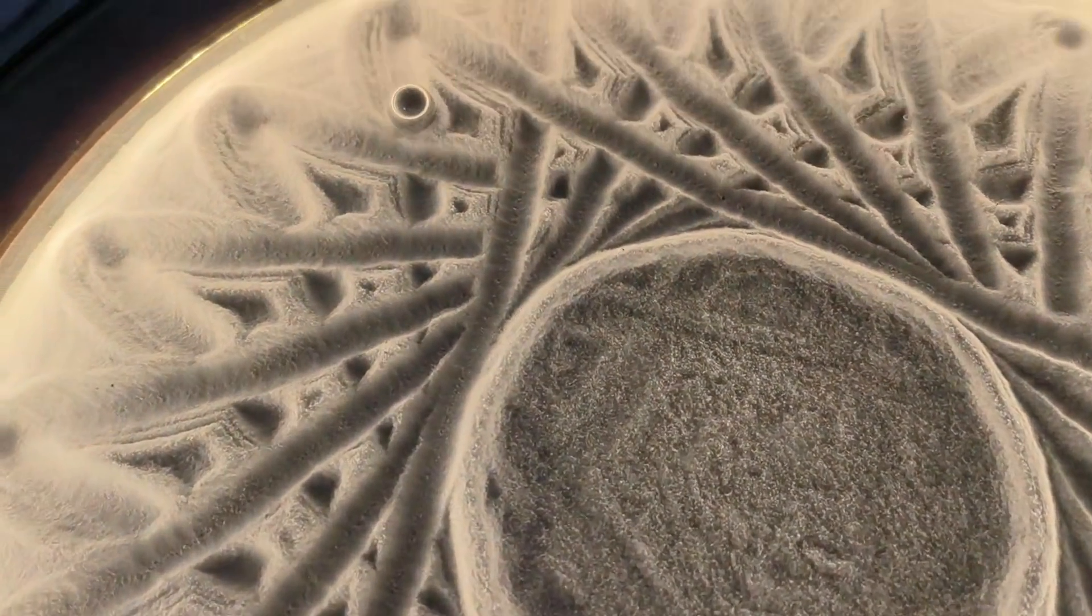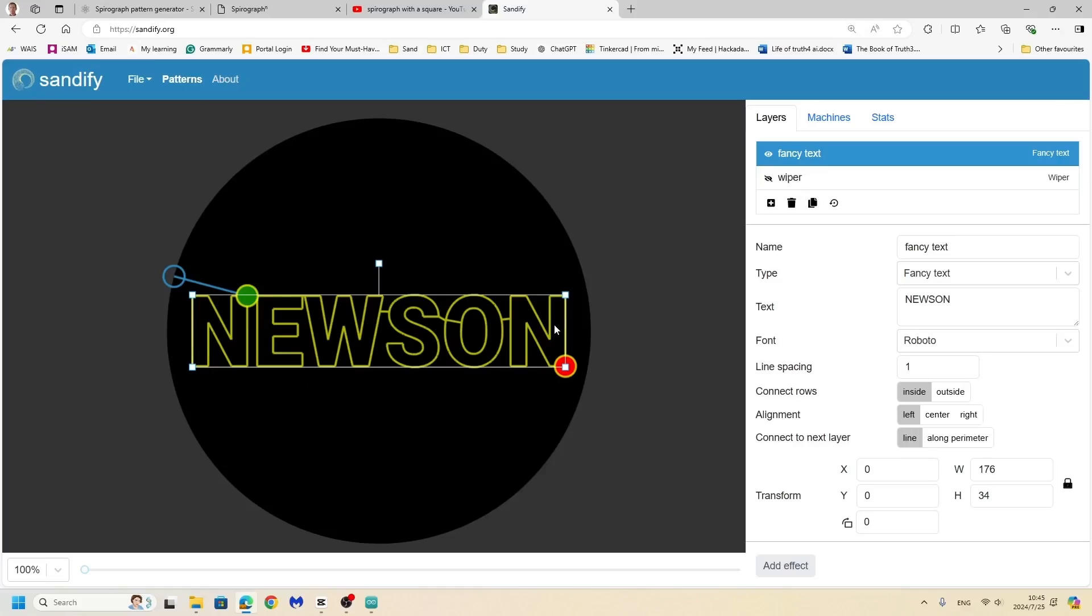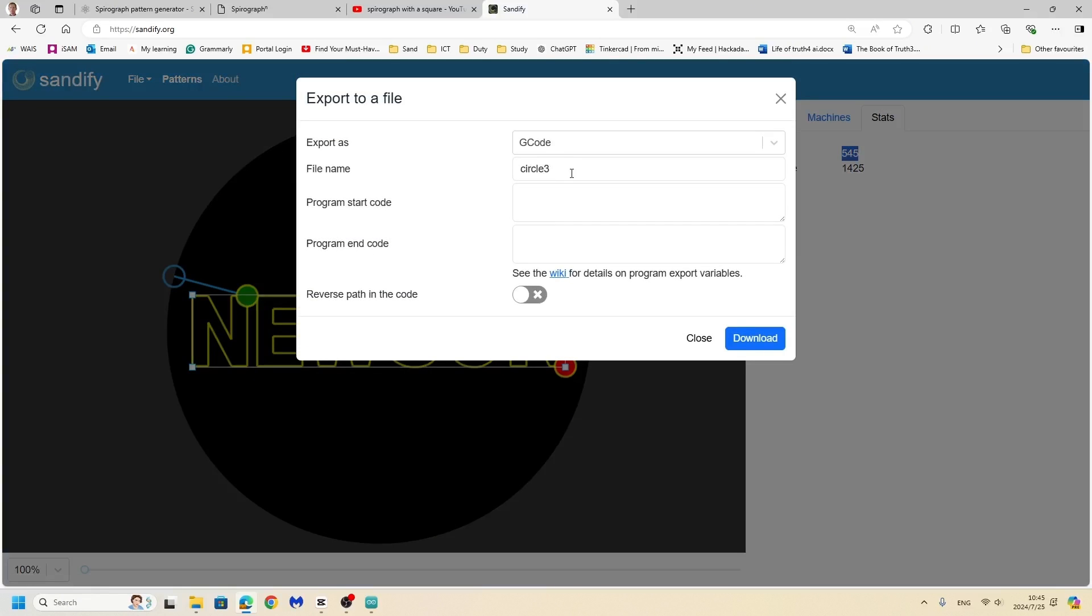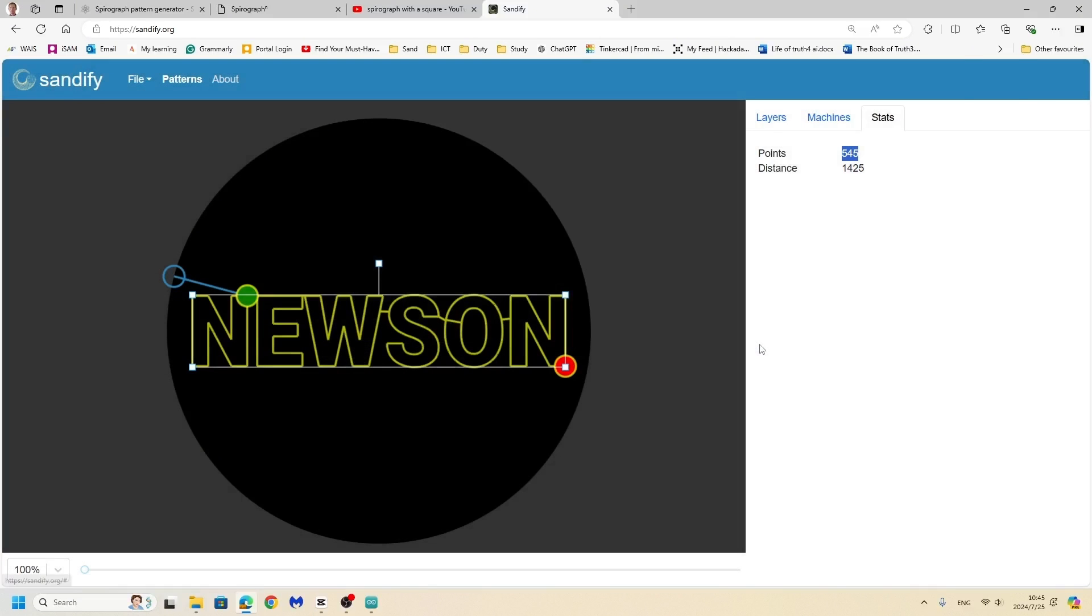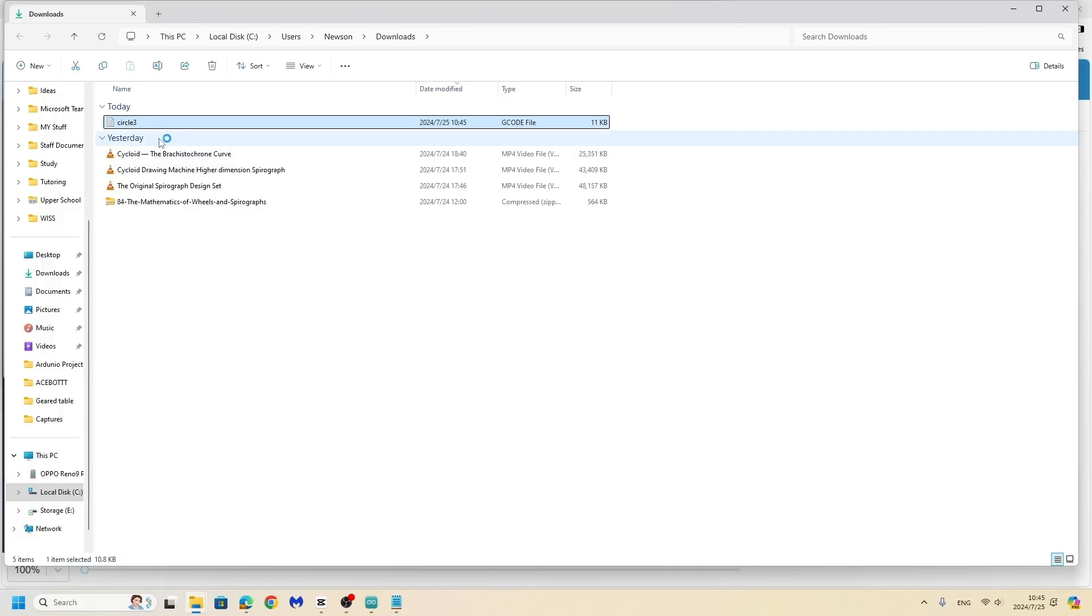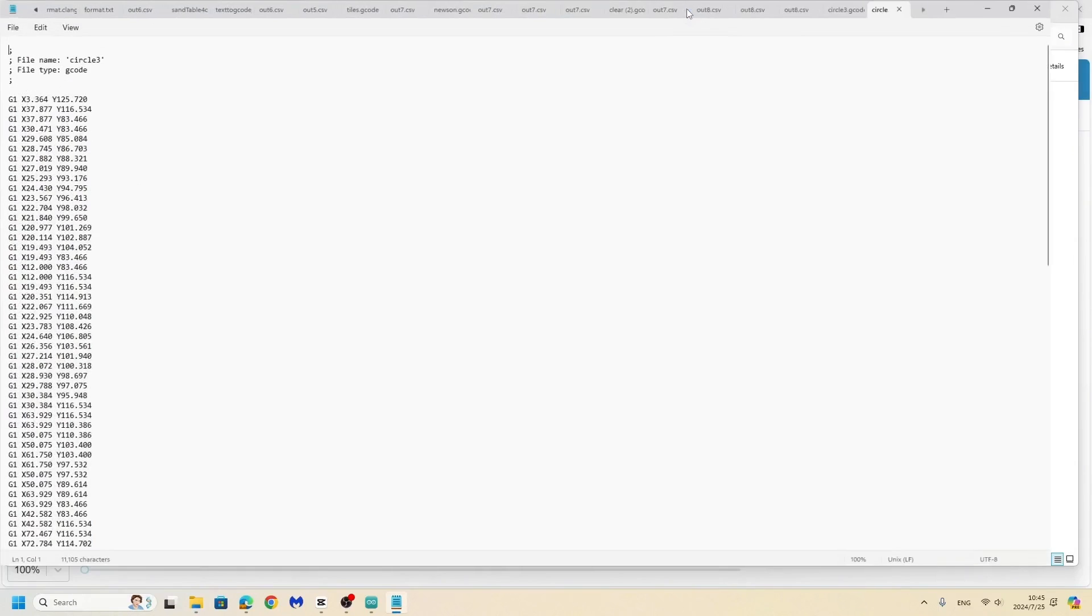You can see we get the exact representation of our function, which is very beautiful. You can also graph more complicated functions, for example names, but this requires more points. I'm using sandify.org, which will give you the G-code.